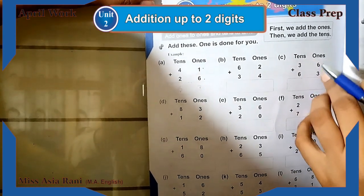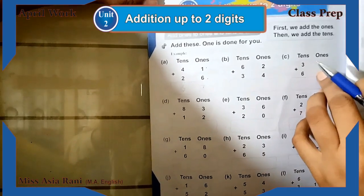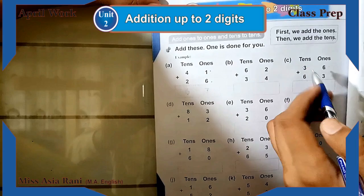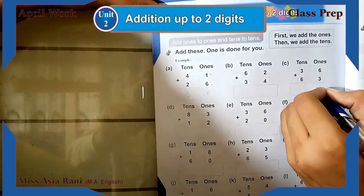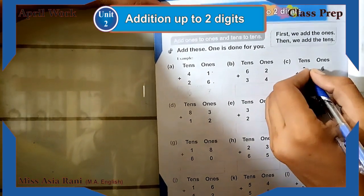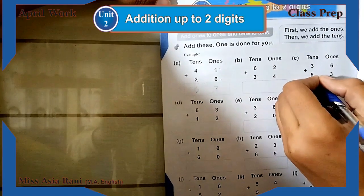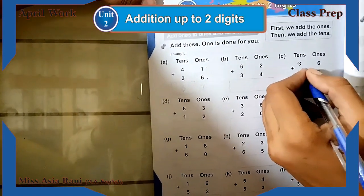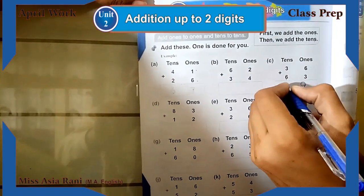And then we add 3. If we add 6 and 3, that means 9. So 9 is here. If you have added 3 to 6, then you will have 9.